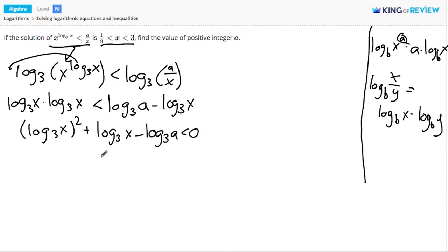Now I have the log base 3 of x twice. I have it once where it's squared and once where it's not. So it might be easier to introduce a variable y and set that equal to the log base 3 of x. Substituting that into my equation, I have y squared plus y minus the log base 3 of a is less than 0. And that's about as far as I can go not knowing a.